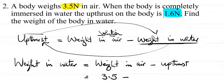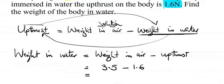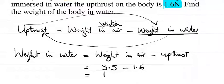which is 1.6 newtons. So 3.5 minus 1.6 equals 1.9 newtons. The answer is 1.9 newtons.